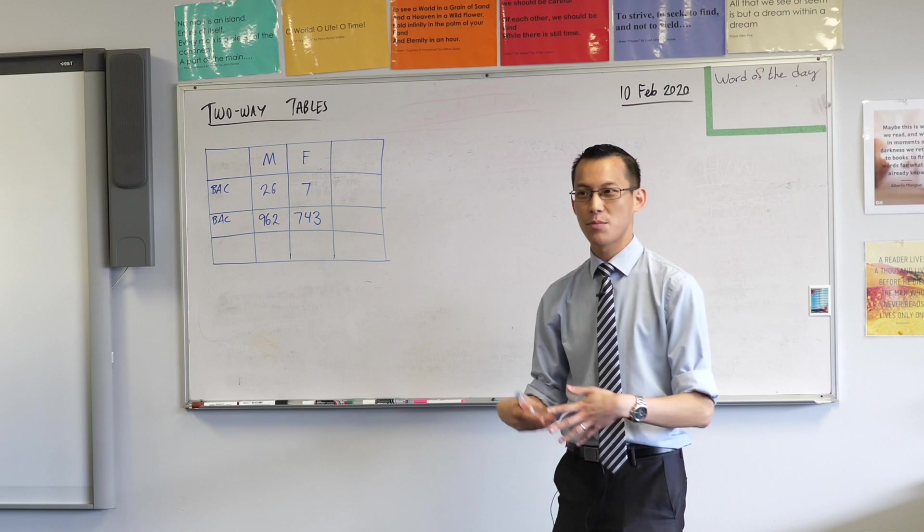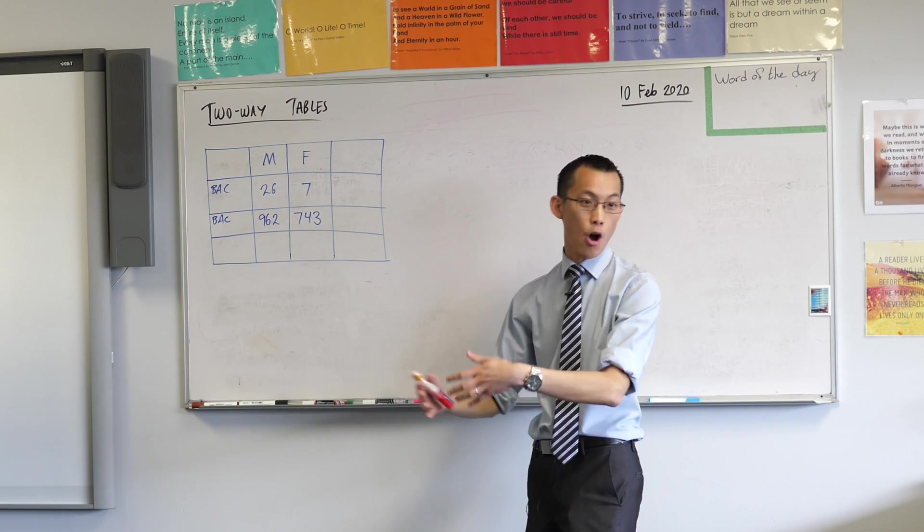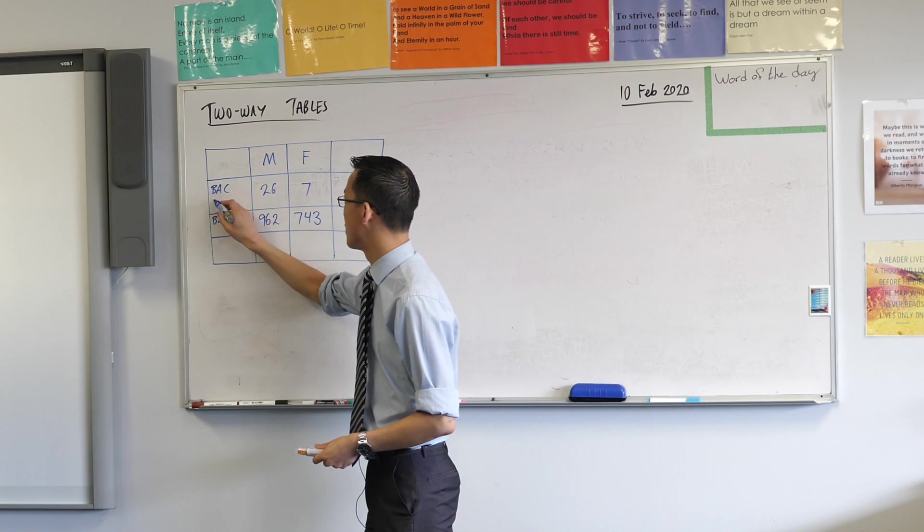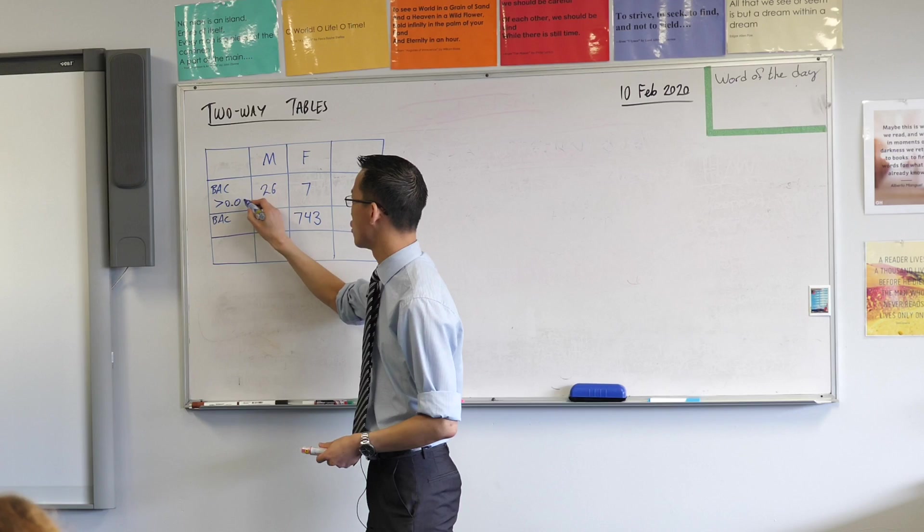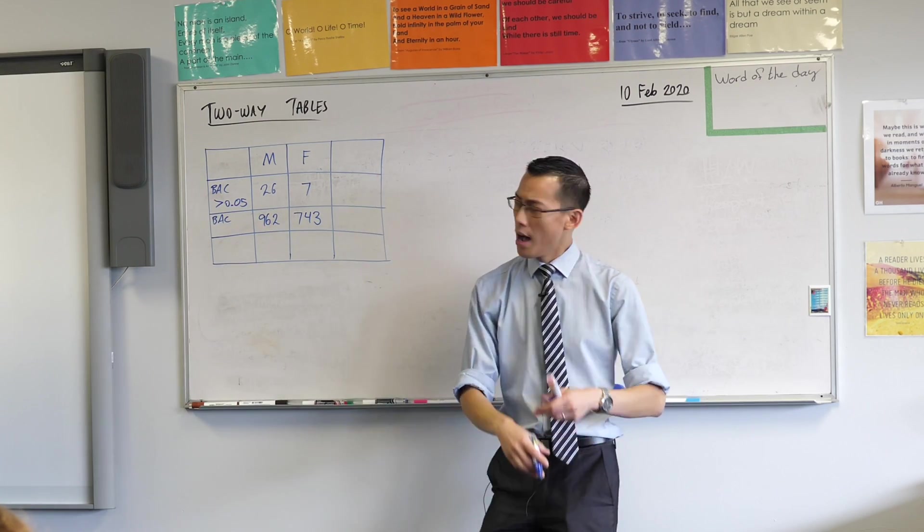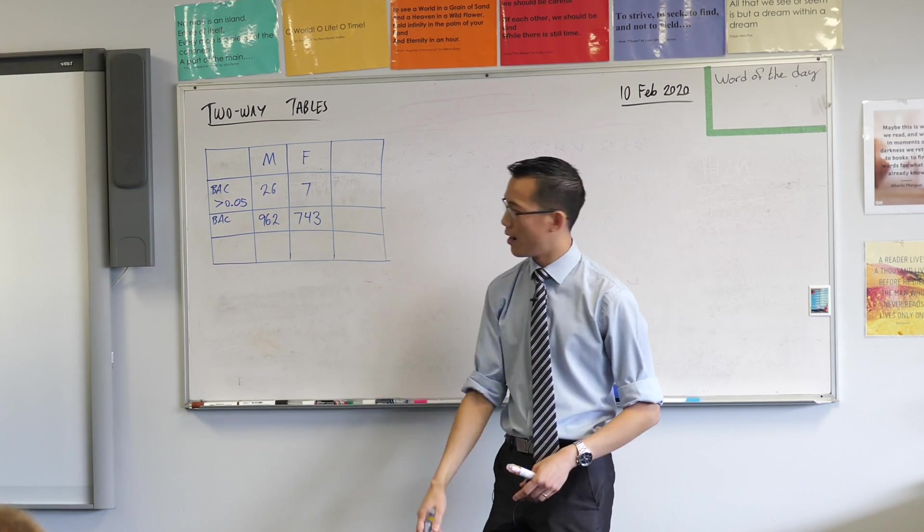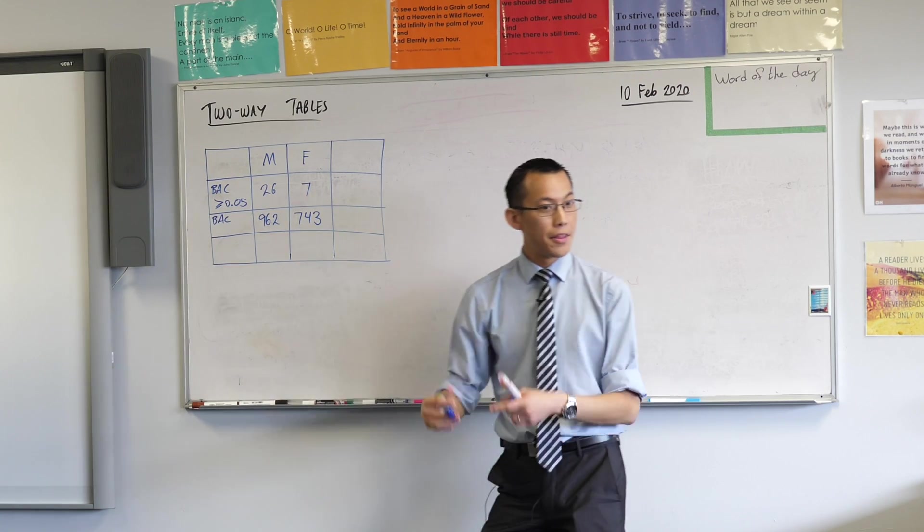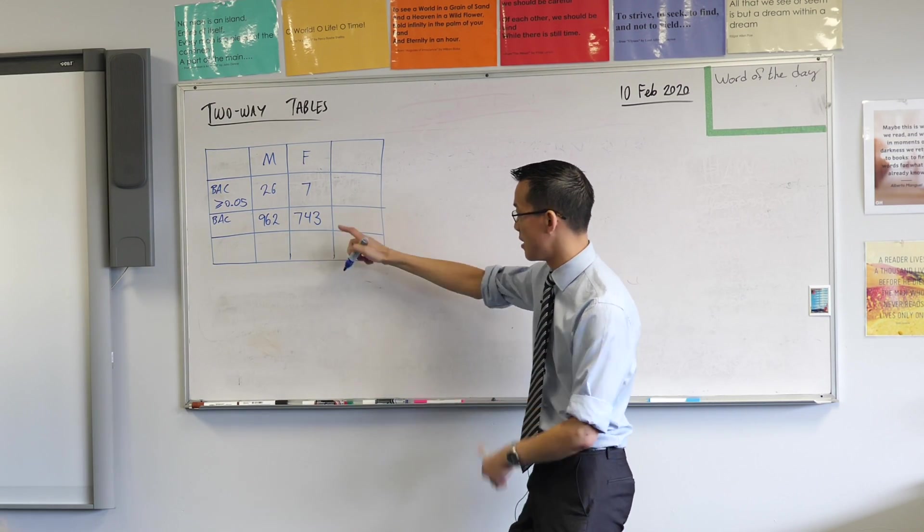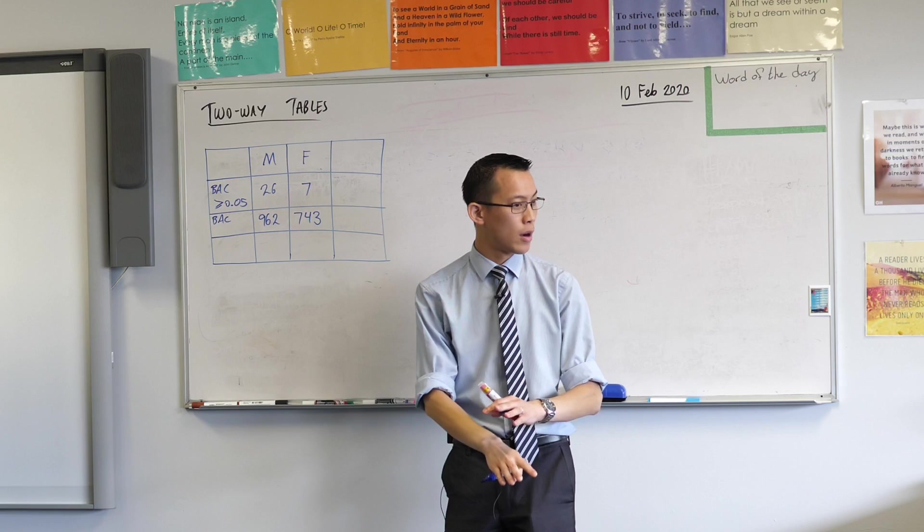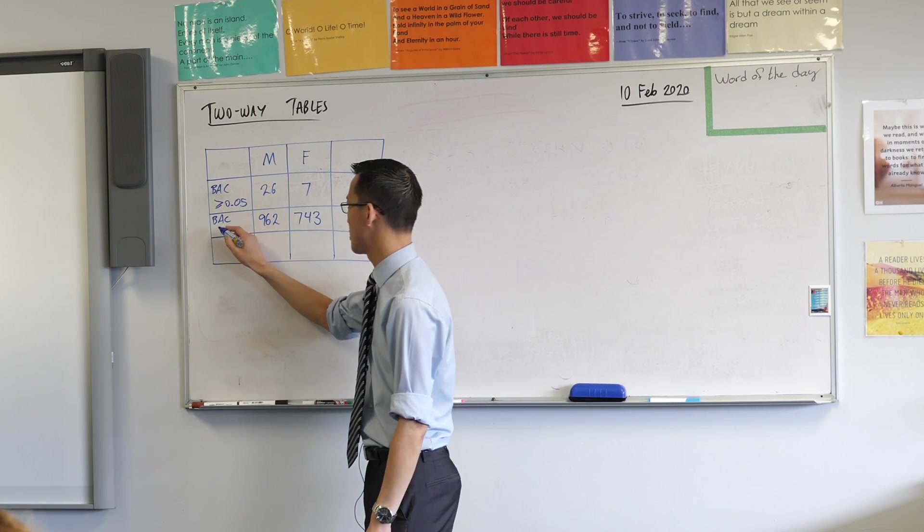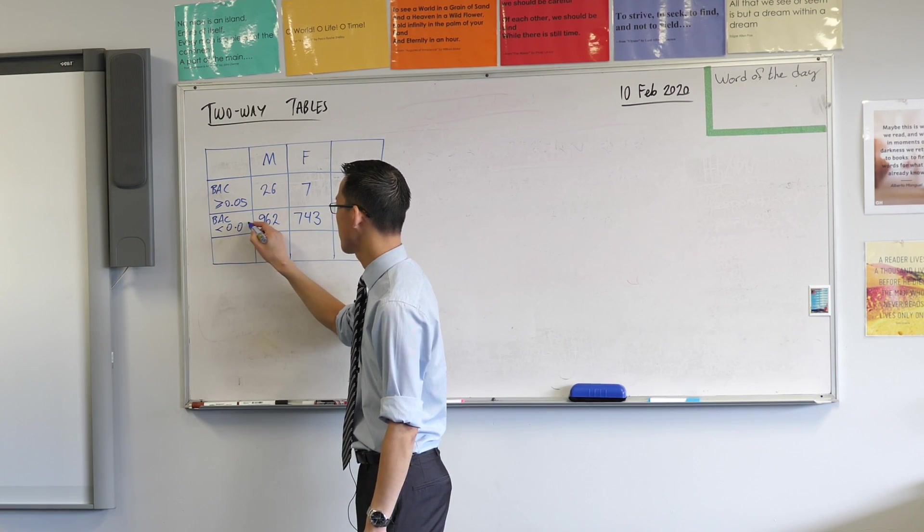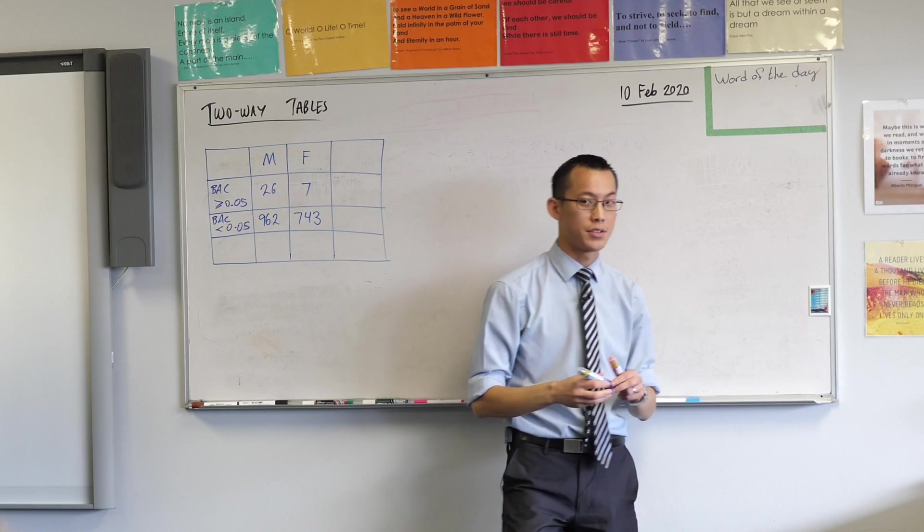And then these guys down here, actually I should say that's greater than or equal to, these guys here underneath this much larger group are the ones who are below that limit. So these are the safe ones. Blood alcohol concentration.